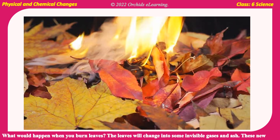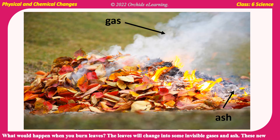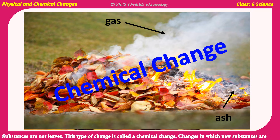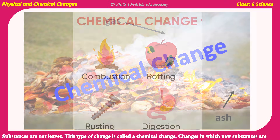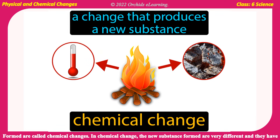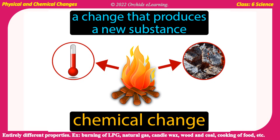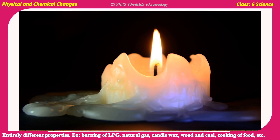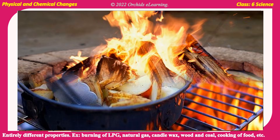What would happen when you burn leaves? The leaves will change into some invisible gases and ash. These new substances are not leaves. This type of change is called a chemical change. Changes in which new substances are formed are called chemical changes. In a chemical change, the new substances formed are very different and have entirely different properties. Examples include burning of LPG, natural gas, candle wax, wood, and coal, and cooking of food.